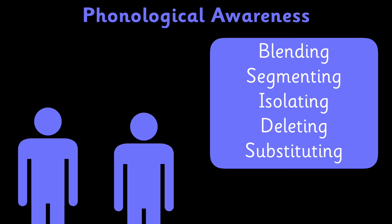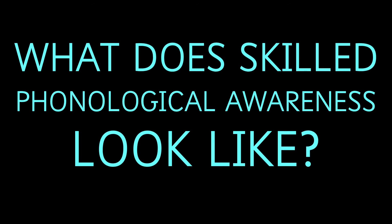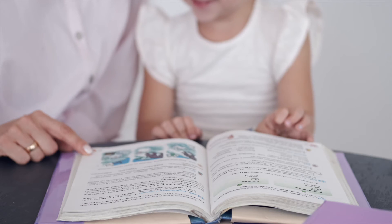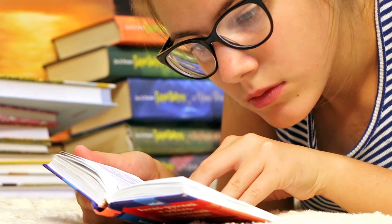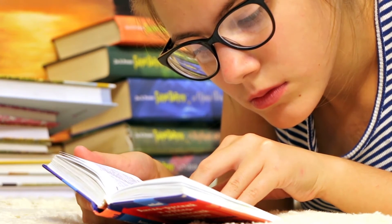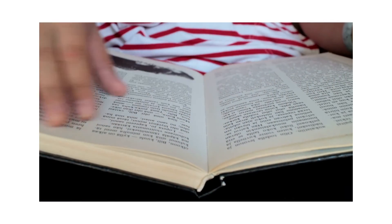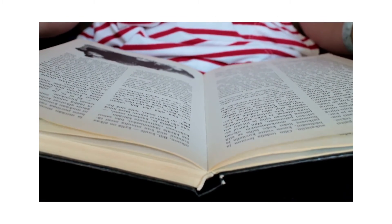So what does the end goal of phonological awareness look like? In order to be able to know what the words say on a page quickly and effortlessly, kids need to become automatic at phonological awareness skills. This means they need to be able to do the skills instantly and effortlessly. What's dog without the d? Og. No pause, no thinking time. And getting to that point takes teaching and practice.